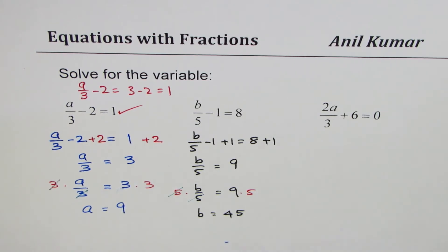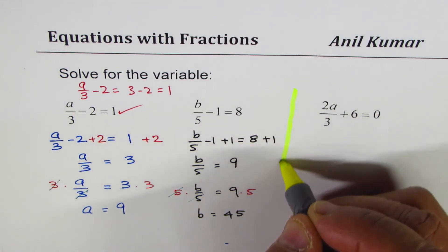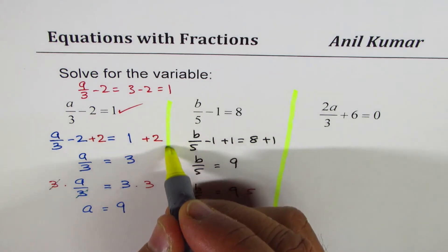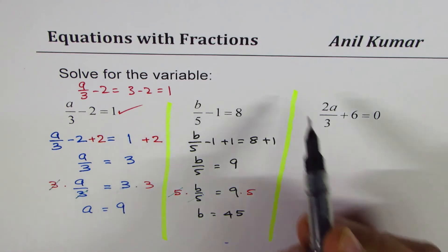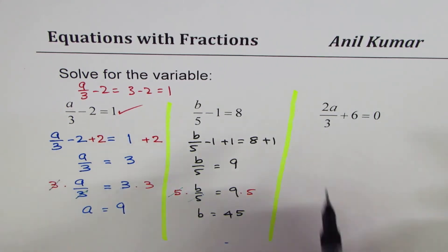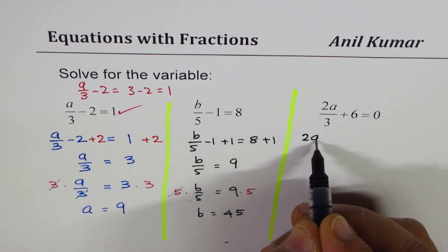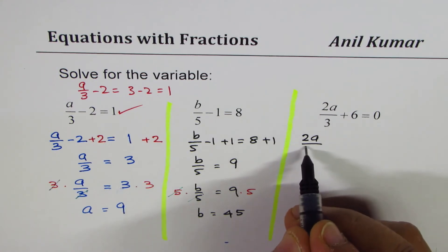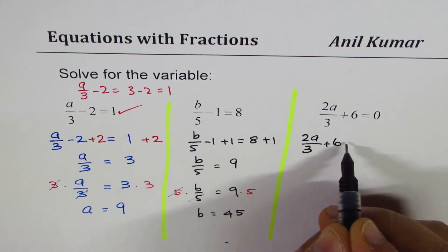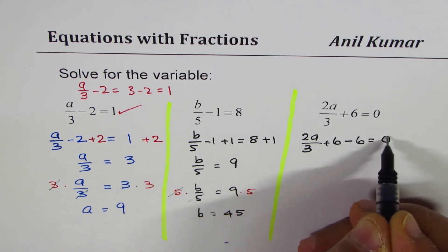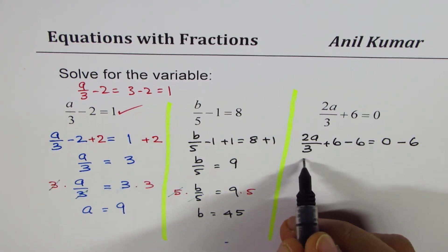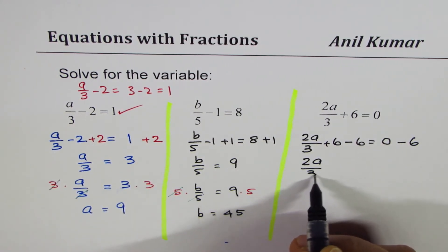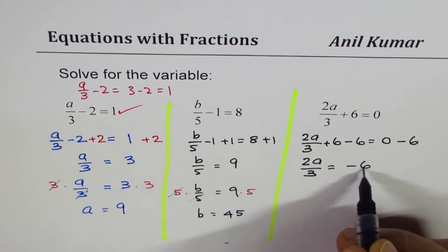Now let's do the last one. You can always pause the video, answer the question, and then check your solution. We have 2a over 3 plus 6 equals to 0. The first step is to take away 6 — we do minus 6 on both sides: 2a over 3 plus 6 minus 6 equals 0 minus 6. That leads to 2a over 3 equals to minus 6.